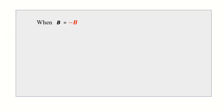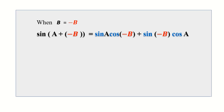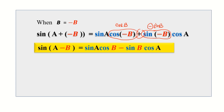When the angle B is replaced with minus B, the addition formula for sine becomes: sine of A plus (minus B) equals sine A cosine B plus sine(minus B) cosine A. We take note that cosine(minus B) equals cosine B and sine(minus B) equals minus sine B. Therefore the addition formula for sine of A minus B equals sine A cosine B minus sine B cosine A.